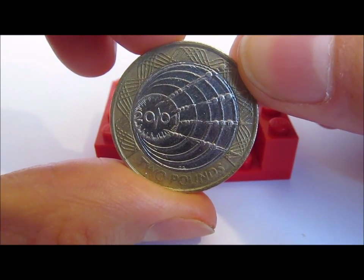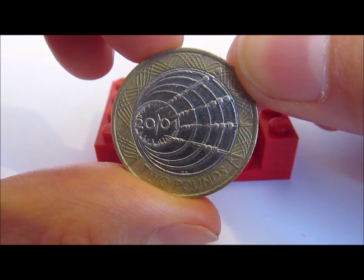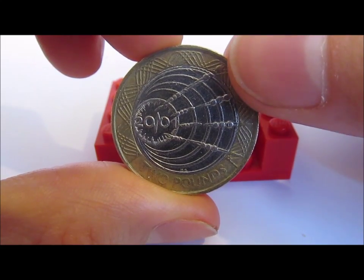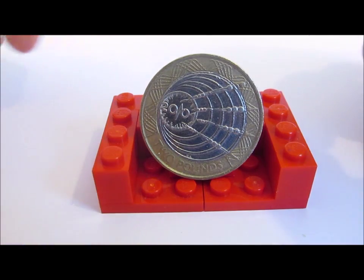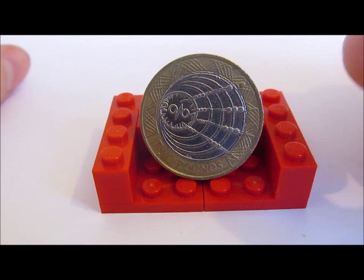And then turning it back over, I've just got a clearer image there of the front design. So I'm just going to put it back down. And this design here was actually by Robert Evans, a Welsh artist and senior engraver at the Royal Mint.